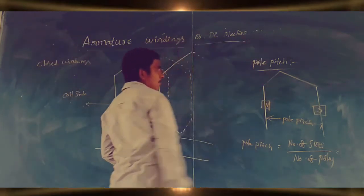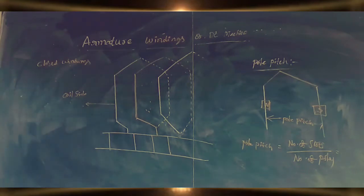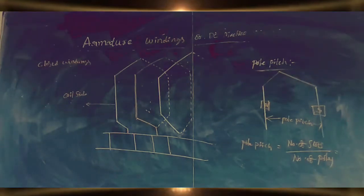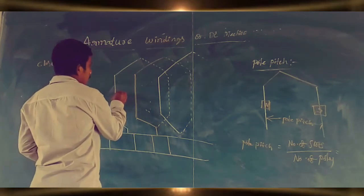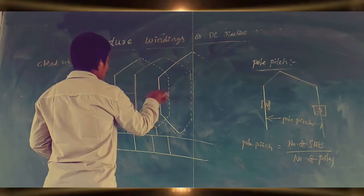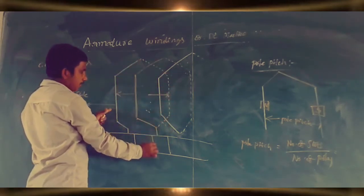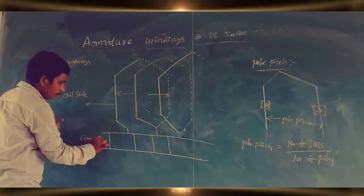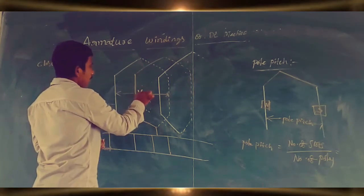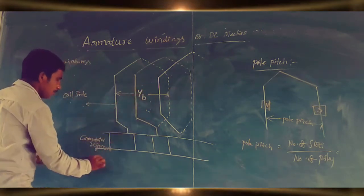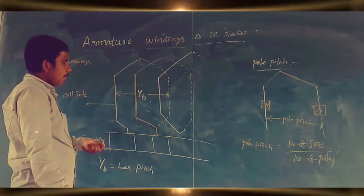Let us discuss about different pitches: front pitch, back pitch, resultant pitch, and commutator pitch. Now, what is back pitch? It is the distance in terms of number of armature conductors between the two sides of a coil at the back of the armature. It is denoted by the letter YB. The distance between two coil sides of the same coil, at the back of the armature, is called back pitch, denoted by YB.